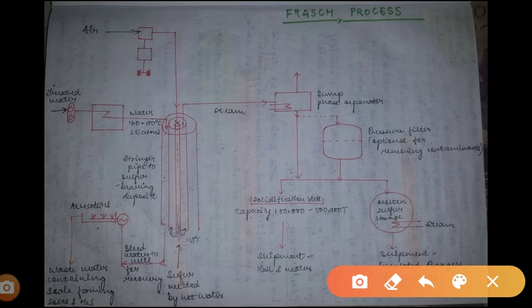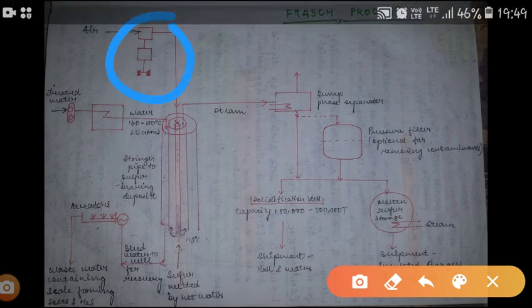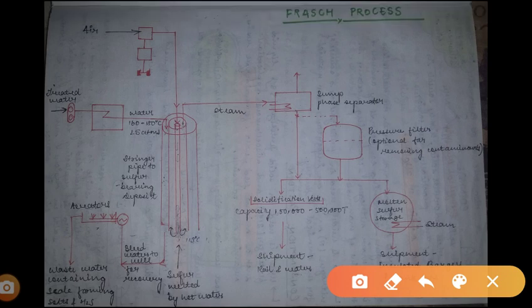Slowly and steadily, the sulfur present in the innermost pipe starts melting. But now also it is not coming out, so to pressurize it, air is compressed with the help of this compressor and then it is allowed to enter the innermost pipe. Now the molten sulfur which is at temperature of about 113 degrees Celsius will flow out of the middle pipe.